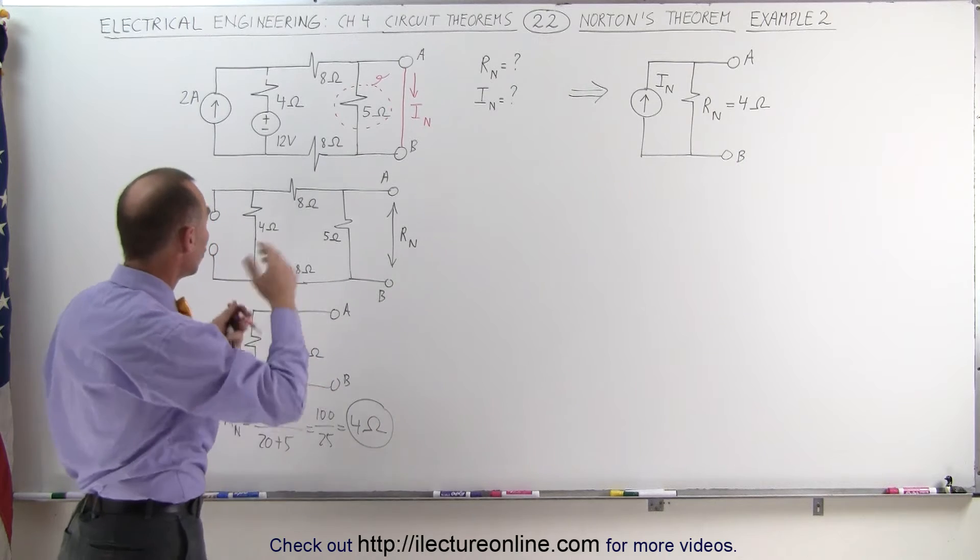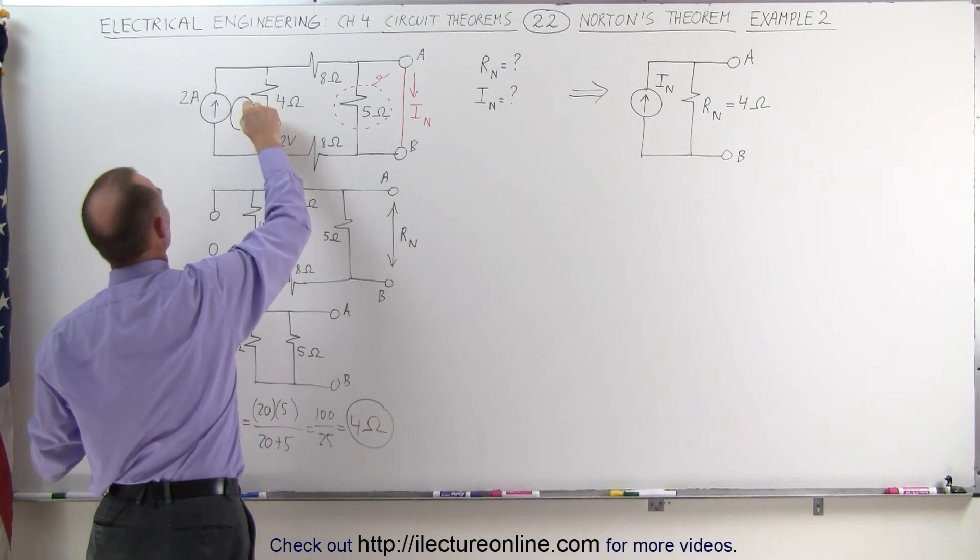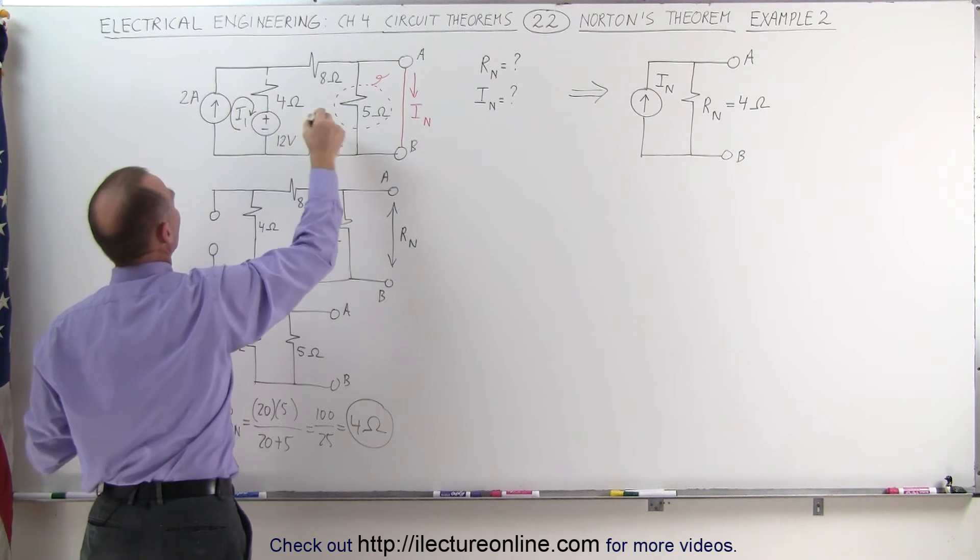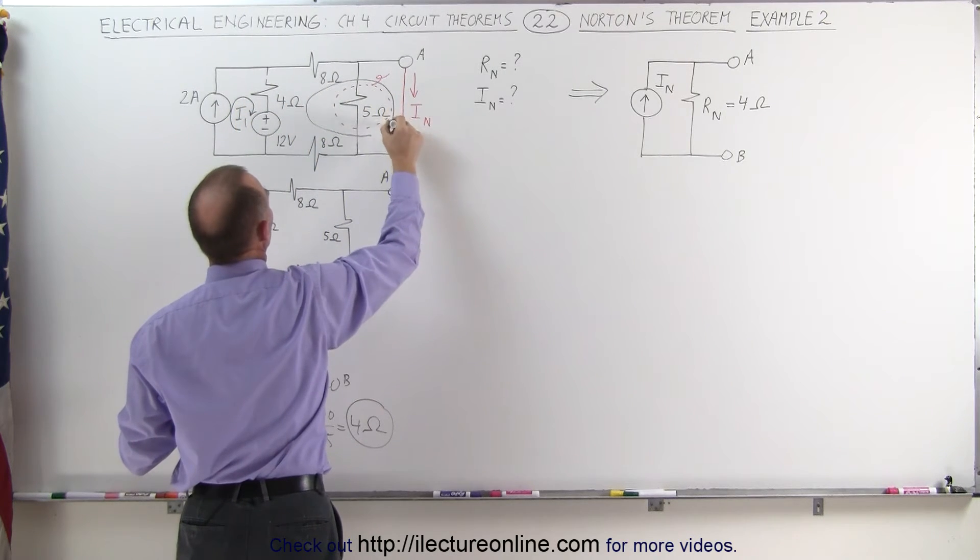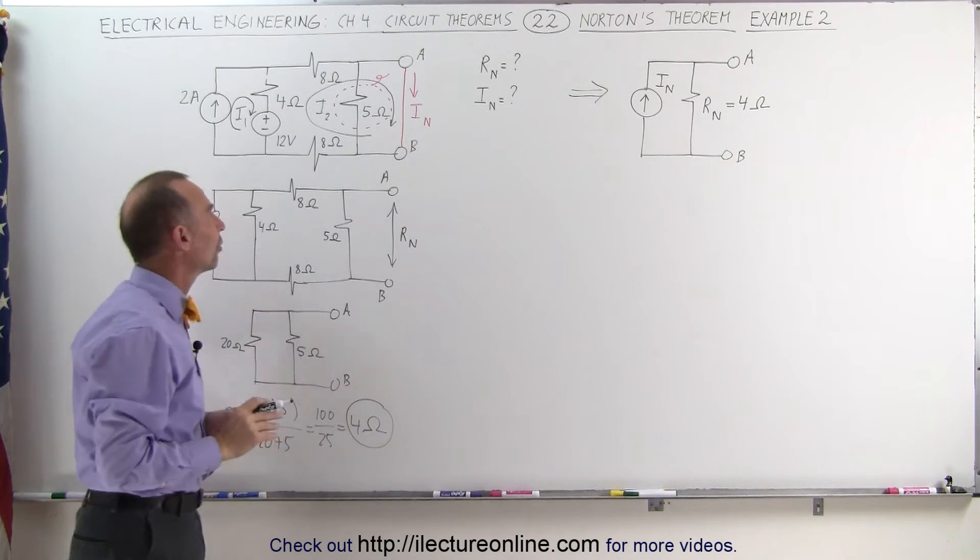That leaves us with two loops. We have our first loop right here. We can call that loop number 1 with current I1. And we can have loop number 2 which goes around like this. Let's call that I sub 2, completely bypassing the 5 ohm resistor.